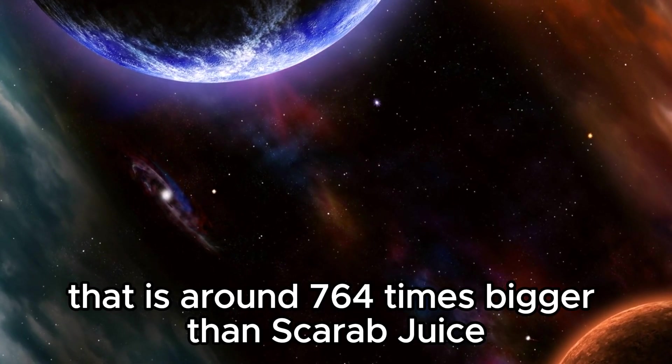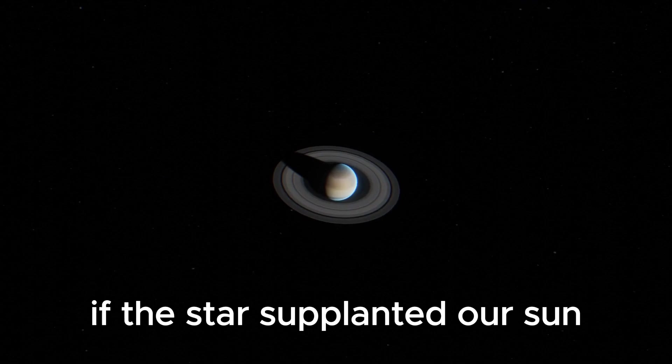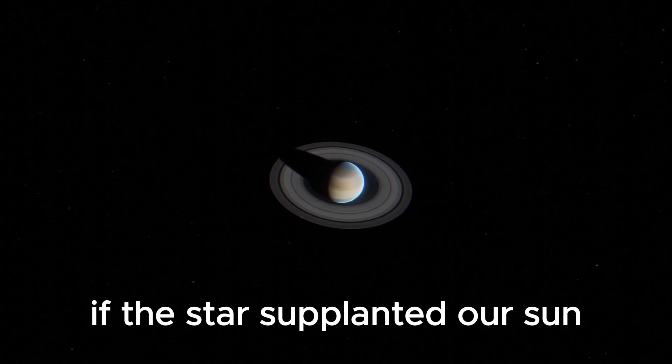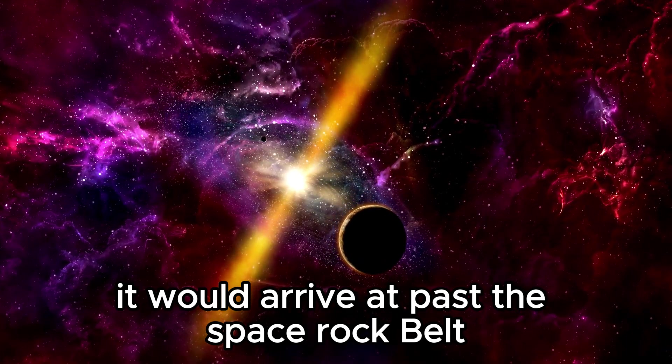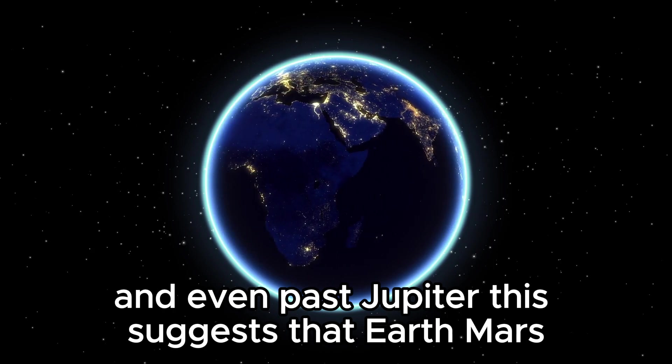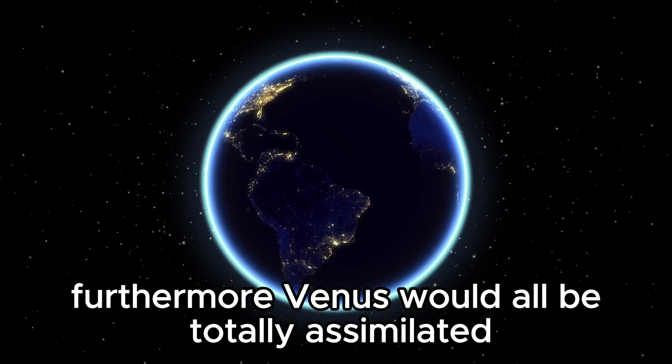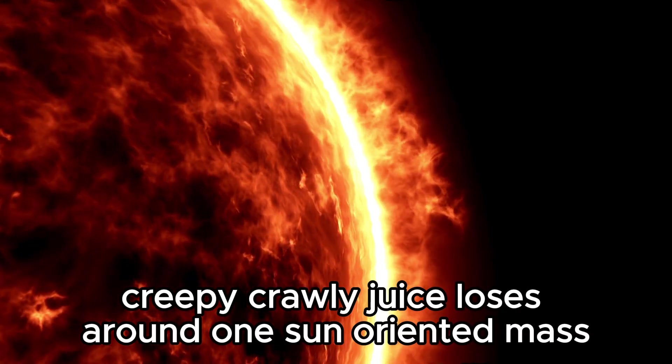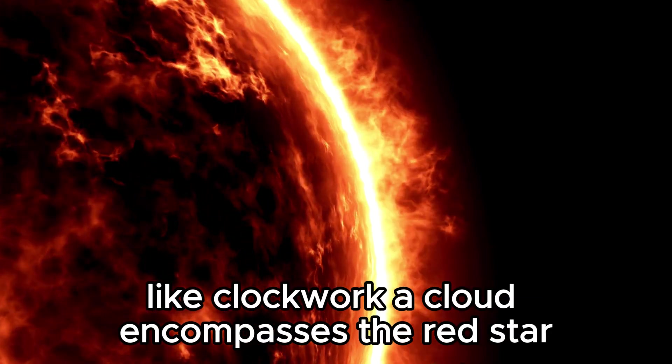The Sun has a span that is around 764 times larger than Betelgeuse. If the star supplanted our Sun in the solar system, it would arrive at past the asteroid belt and even past Jupiter. This implies that Earth, Mars, Venus, and Mercury would all be totally assimilated. Betelgeuse loses around one solar mass like clockwork.